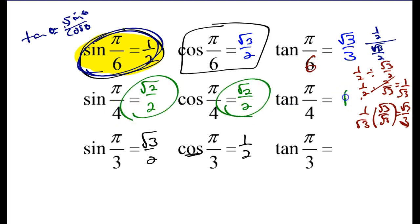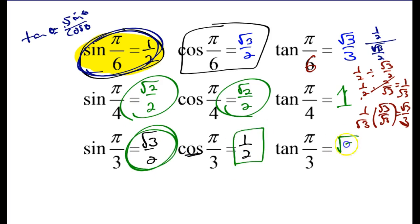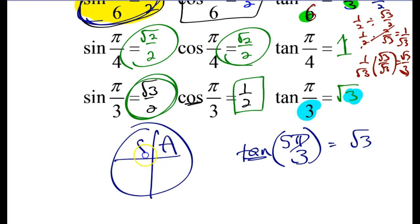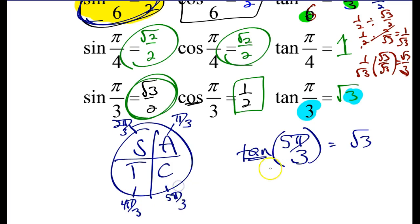Any number divided by itself is 1, so the tangent of pi/4 is 1. And if you take sine (√3/2) divided by cosine (1/2) for pi/3, you get √3. So if '3 plus 3 is 6,' then if there's only one 3, the tangent of all pi/3 angles is just √3. For example, the tangent of 5pi/3: count by pi/3s — 1, 2, 4, 5 — you're in the fourth quadrant. Only cosine is positive there, so the tangent of 5pi/3 is negative √3.